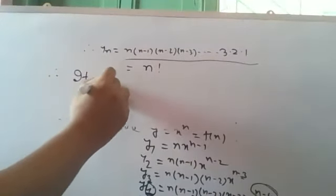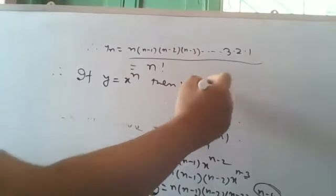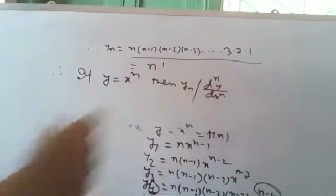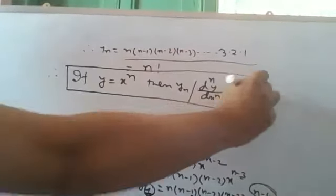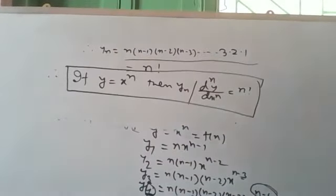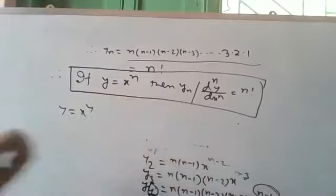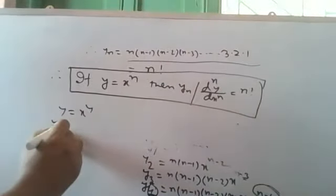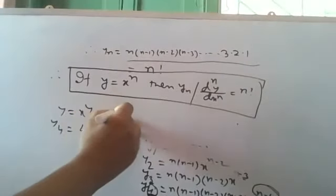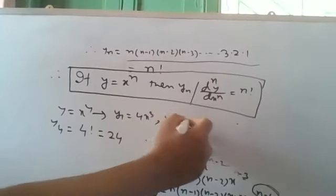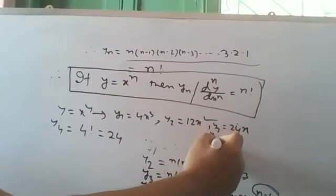Therefore, if y is equal to x to the power n, then yn, which means dny/dxn, is equal to n factorial. We can easily verify this with a power: if y is equal to x to the power 4, then y1 = 4x³, y2 = 12x², y3 = 24x, and y4 = 24, which is 4 factorial.